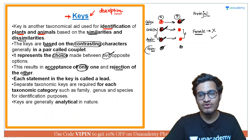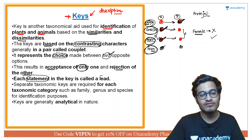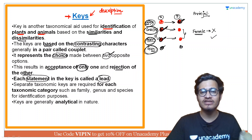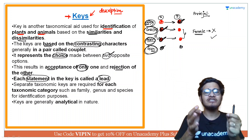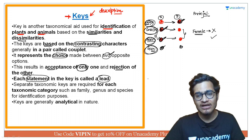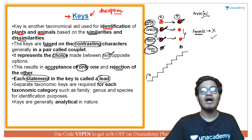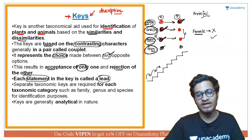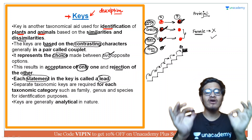हर statement को key की एक 'lead' बोलते हैं, क्योंकि जैसे जैसे आप उन characters से होके गुजरते जाओगे, आपको identification में lead मिलती चली जाएगी — आप किसी specimen को पहचानने के और नज़दीक चले जाओगे. जैसे एक मंज़िल पर पहुँचने के लिए सीढ़ियां चड़नी पड़ती हैं, similarly यहाँ पर keys के अंदर जो characters दिये हैं उनको mark करना पड़ेगा. हर lead को cross करते हुए आप finally अपने final destination पर पहुँच जाओगे और identification कर पाओगे.